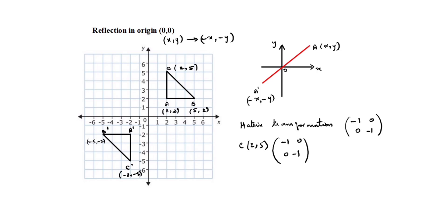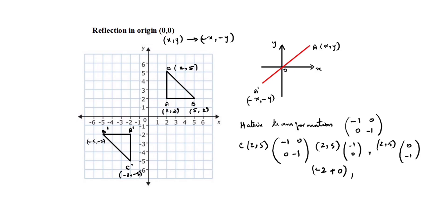Taking c as 2 comma 5 and multiplying by the matrix: 2 into minus 1 plus 5 into 0 gives minus 2; 2 into 0 plus 5 into minus 1 gives minus 5. So the result is minus 2 comma minus 5, the same as the first method.